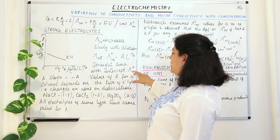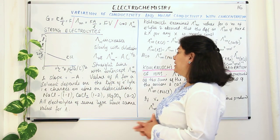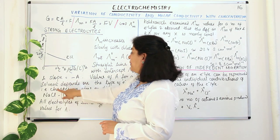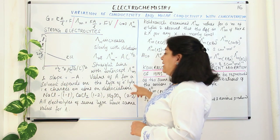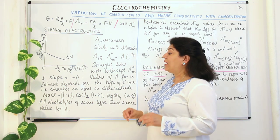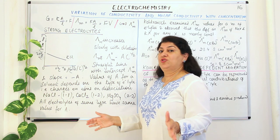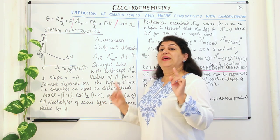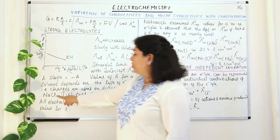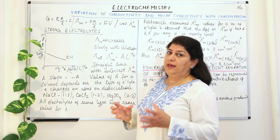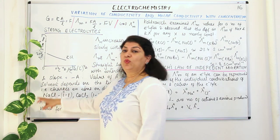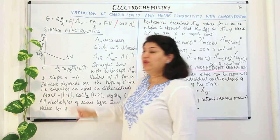The intercept is at λ°m, and the value of A for a solvent depends on the type of electrolyte — that is, the charges on the ions on dissociation. For example, if you have sodium chloride, it dissociates into Na⁺ and Cl⁻. The charges on both sodium and chloride are one positive and one negative. Such electrolyte compounds which give a cation and anion of 1-1 charge are kept under one category, known as the 1-1 kind of compounds.